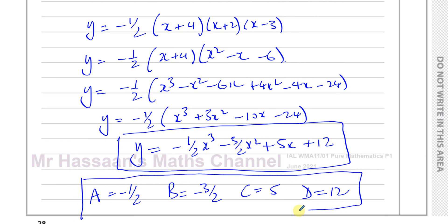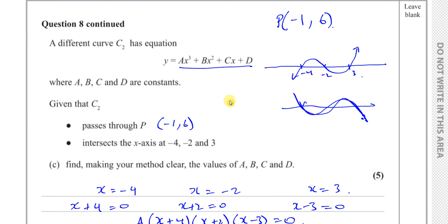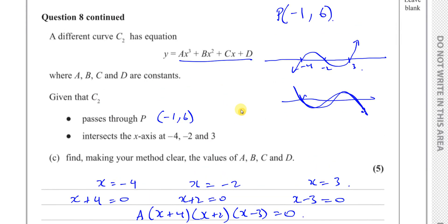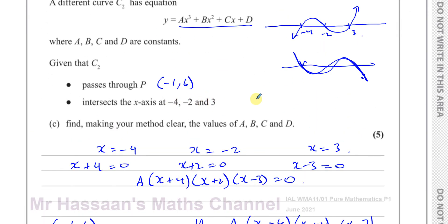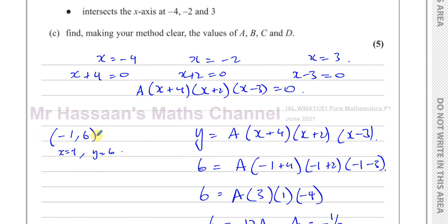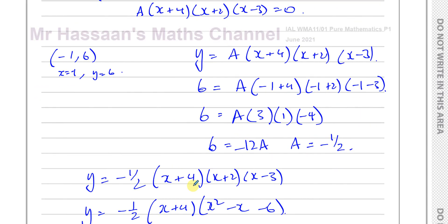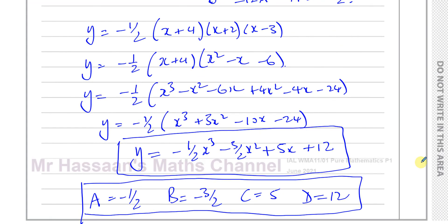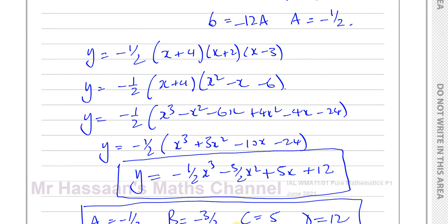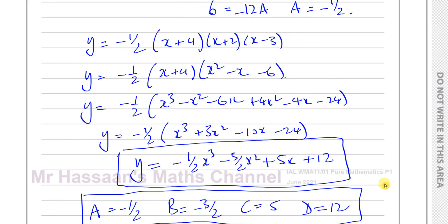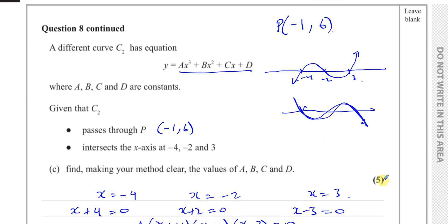So the final answers are: a equals minus one half, b equals minus three halves, c equals 5, and d equals 12. To summarize the method for part C: find the three factors from the three roots, include a constant multiplier a out front, substitute the known point to find a, then expand to get the equation in the required form. This concludes question 8.